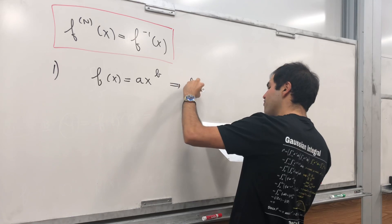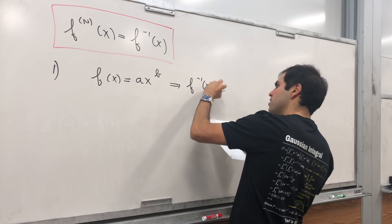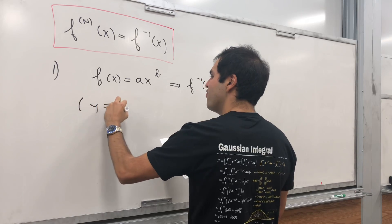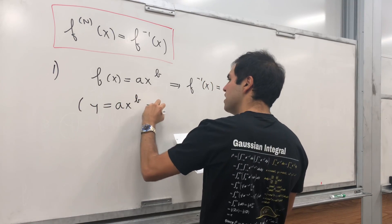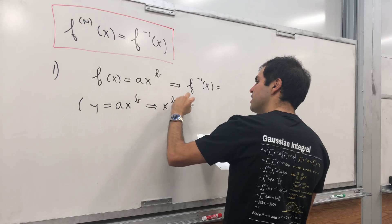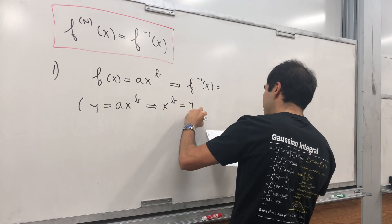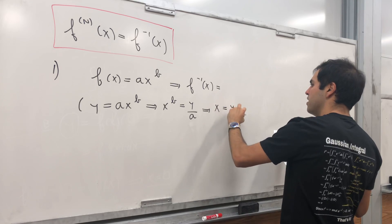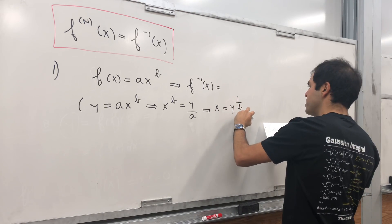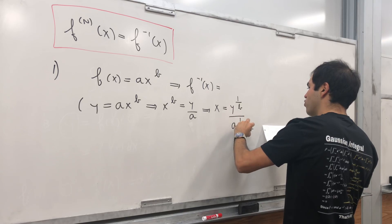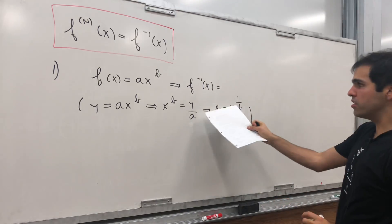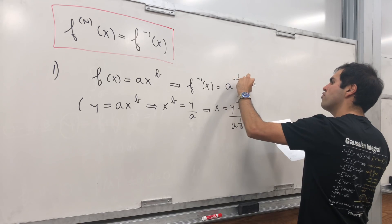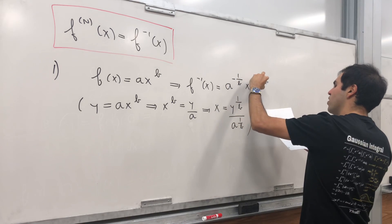First of all, let's find the inverse function. If y equals ax to the b, then x to the b is y over a, which means that x — assuming it's positive — is y to the 1 over b, divided by a to the 1 over b. Which tells us that the inverse function is a to the minus 1 over b, times x to the 1 over b.